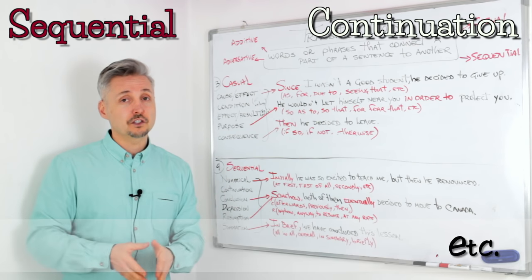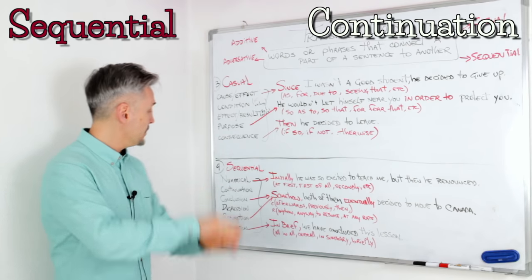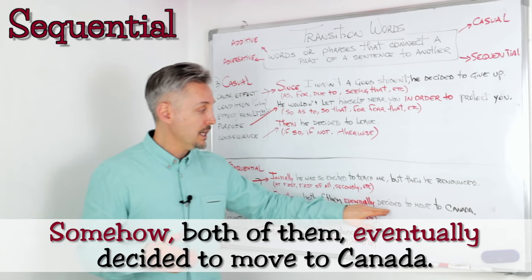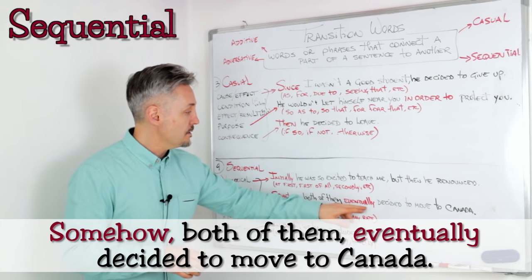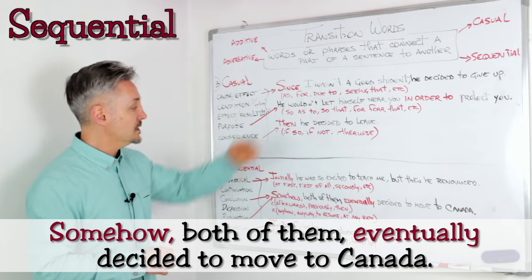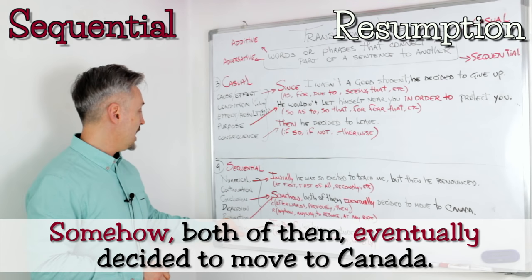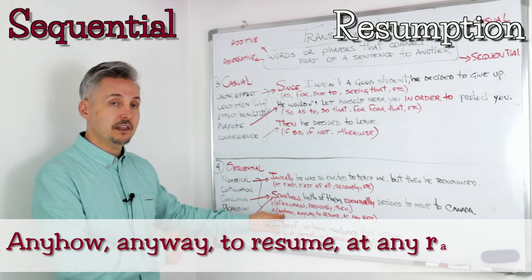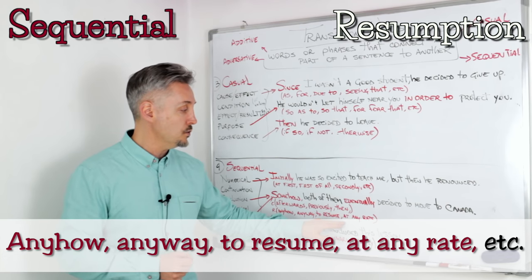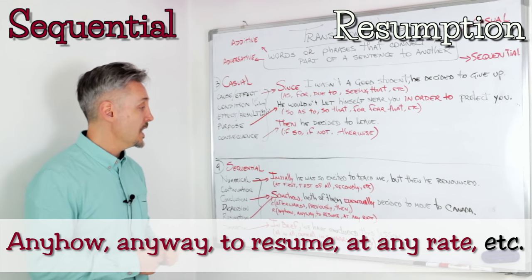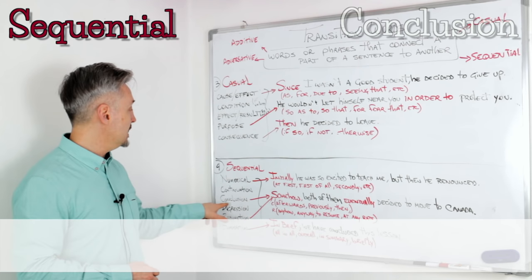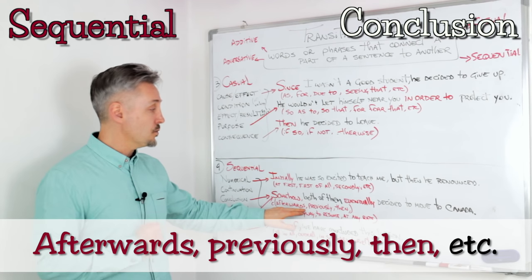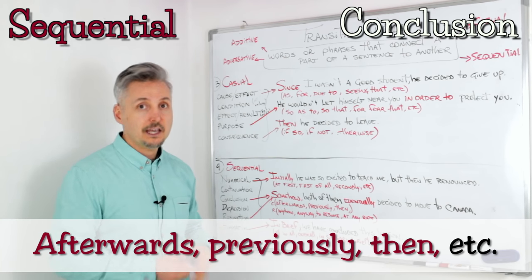I don't have an example for continuation — you'll have to forgive me. Moving on to conclusion and resumption: 'Somehow, both of them eventually decided to move to Canada.' Here there are two transition words. 'Somehow' is a resumption word — you can replace it with 'anyhow,' 'anyway,' 'to resume,' 'at any rate.' And 'eventually' is a conclusion transition word — you can replace it with 'afterwards,' 'previously,' 'then,' etc.